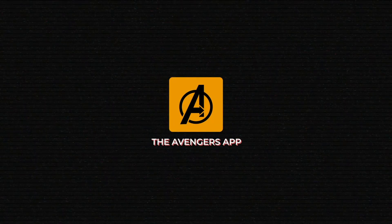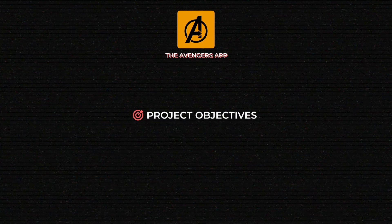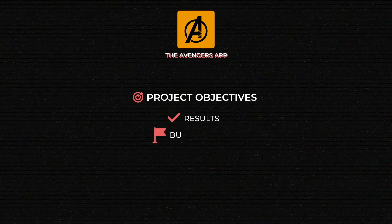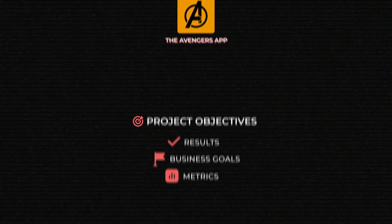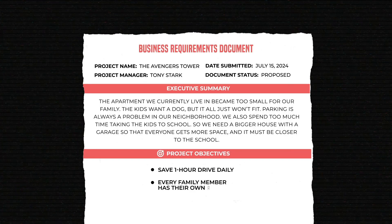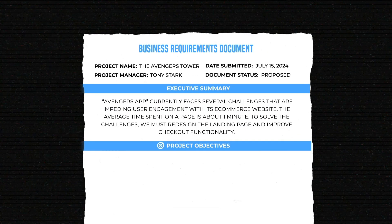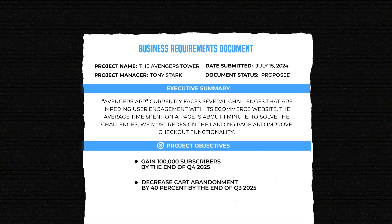After you outline the high-level scope, the next section to fill out is the Project Objectives. This part must describe the results you expect to achieve and how they contribute to your overall business goals. Also include specific metrics to measure project outcomes. For building a house, the objectives can be 'save one hour drive daily' or 'every family member has their own room.' For software projects, you might write something like 'gain 100,000 subscribers by the end of Q4 2025' or 'decrease cart abandonment by 40% by the end of Q3 2025.'